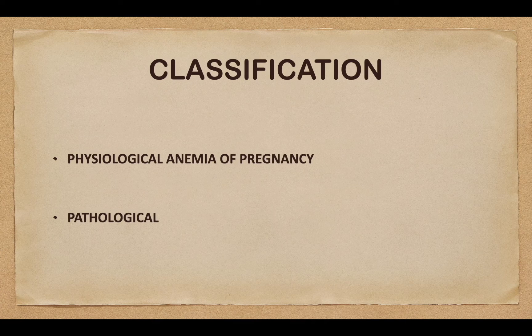Classification: physiological anemia of pregnancy and pathological anemia. Physiological adaptation in pregnancy leads to physiological anemia of pregnancy. This is because the plasma volume expansion is greater than the red cell mass increase, which causes hemodilution. Normal pregnancy increases the iron requirement by 2 to 3 fold and folate requirement by 10 to 20 fold.